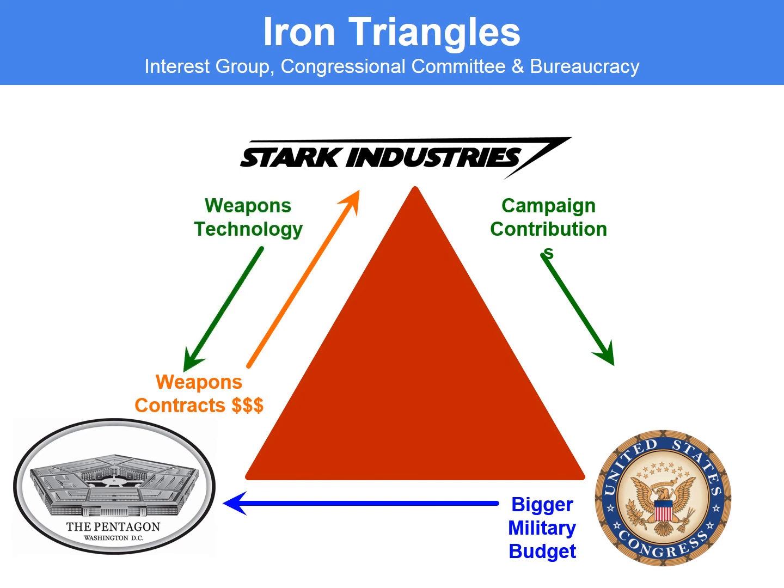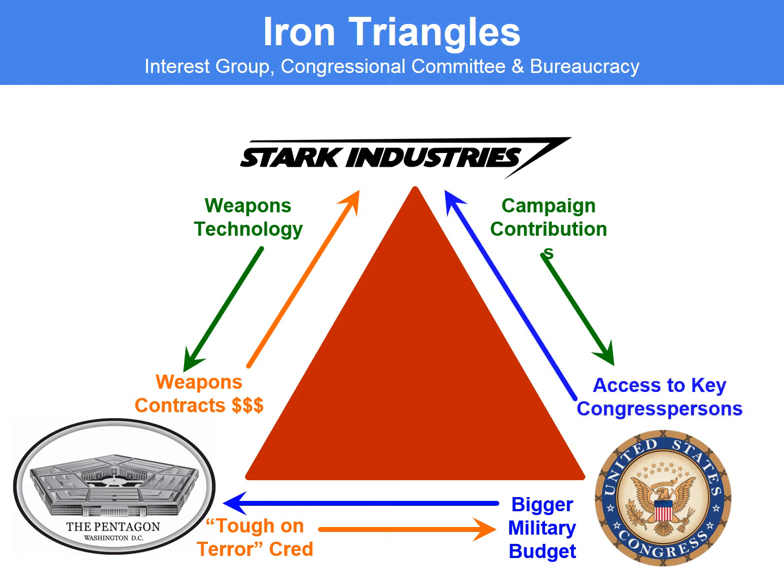This works the other way as well. Stark Industries could give their weapons technology to the Pentagon, and then the Pentagon gets tough-on-terror credibility, and Stark Industries gets access to key Congress people. So this can work in either direction — essentially it's this relationship between these three cornerstones: the interest groups, the congressional committee members, and the bureaucracy. And sometimes as a result of this iron triangle, we get groups that are too powerful, that have too much control in the bureaucracy and in Congress, and you get bad policy.